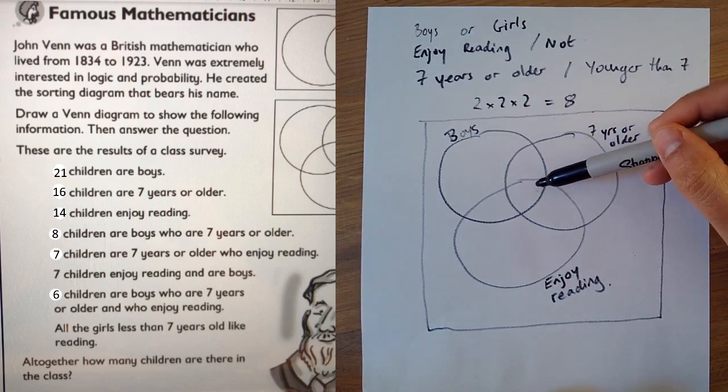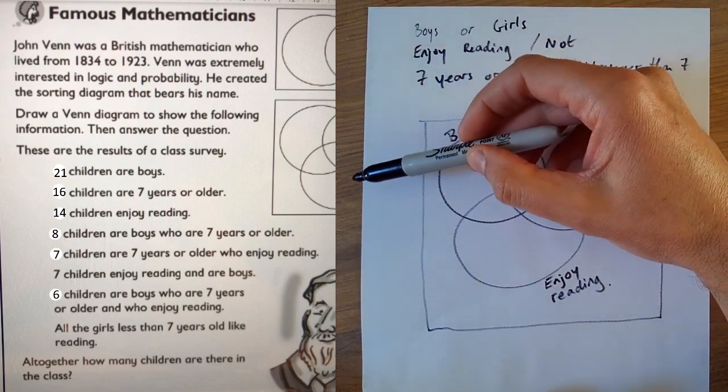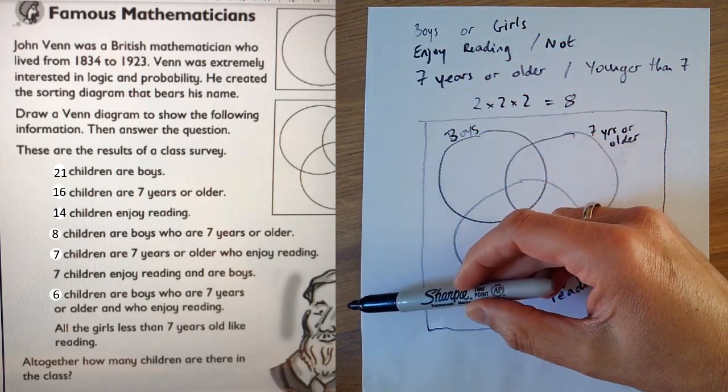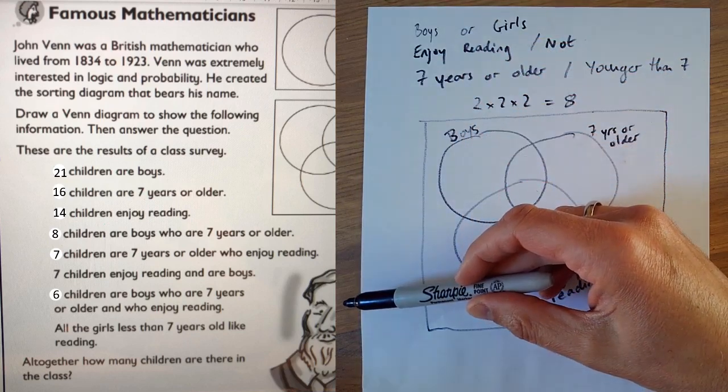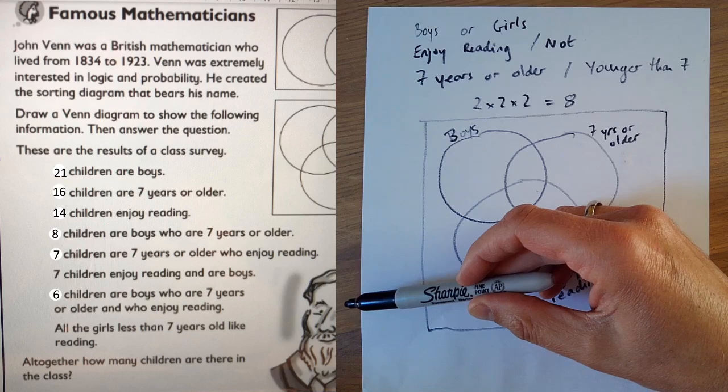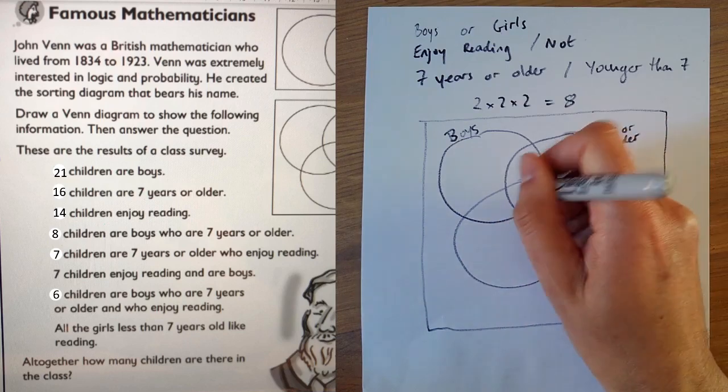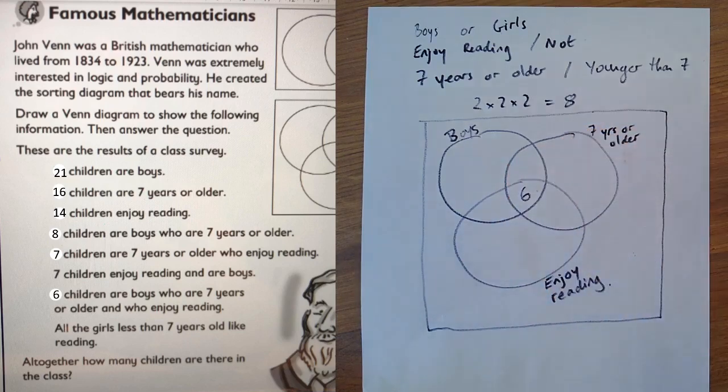And at the very bottom, that's the longest sentence. That's likely to be it. Six children are boys who are seven years or older and enjoy reading. And that's this one here. So we're going to put that six in there.